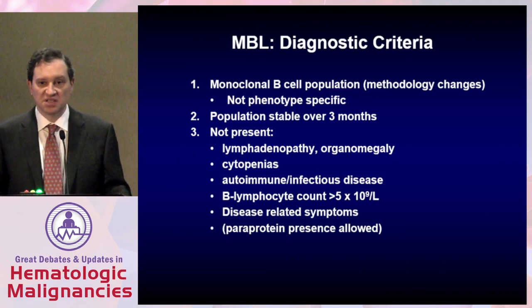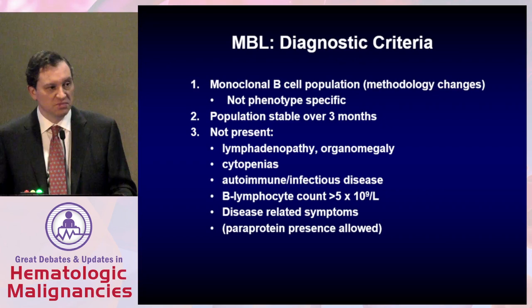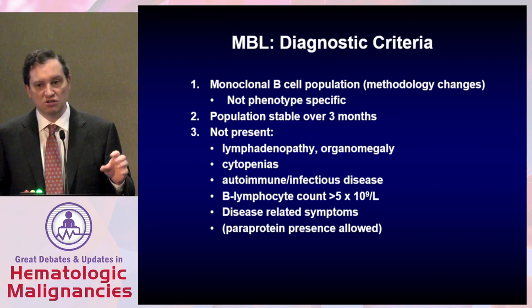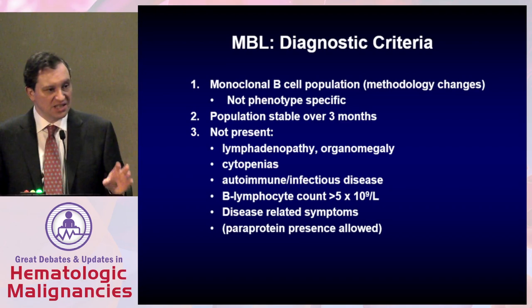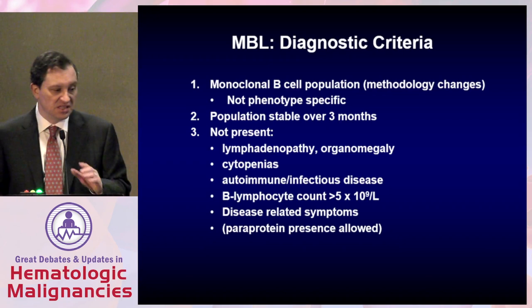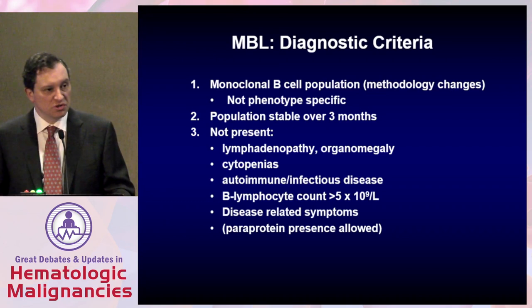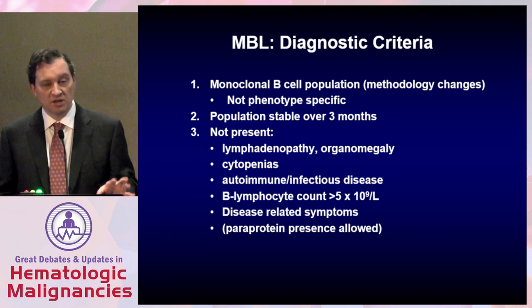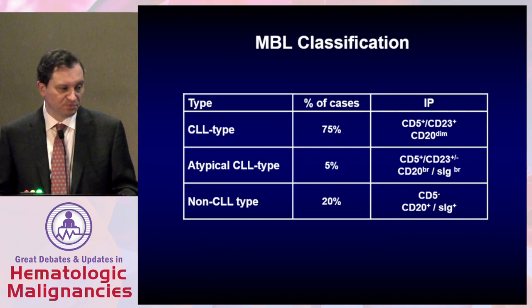The diagnostic criteria essentially require that you don't have CLL — it's a monoclonal B cell population in the peripheral blood. As the methodology changes, so does the ability to diagnose these populations. Flow cytometry at a sensitivity of 1 in 10,000 will generate very different data than standard commercial flow. The monoclonal B cells must be stable for over three months, with a complete lack of cytopenias, hepatosplenomegaly, lymphadenopathy, or disease-related symptoms, and the count must be less than 5,000 — otherwise the patient is characterized as CLL. Importantly, a paraprotein can be present, so a monoclonal spike is allowed and patients can still qualify as MBL.